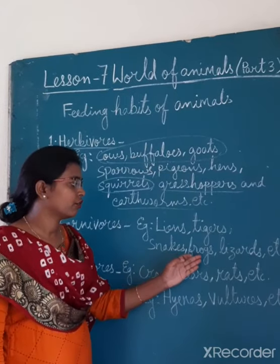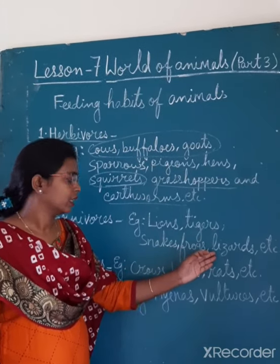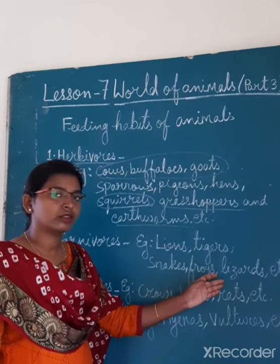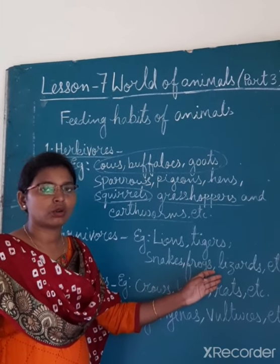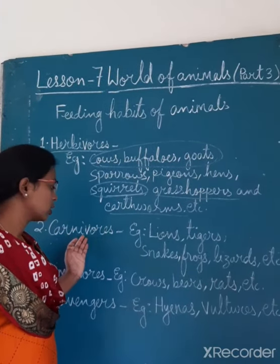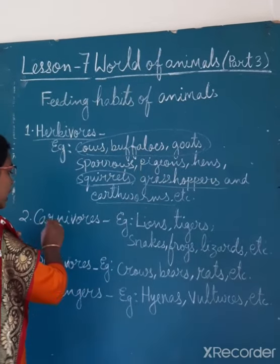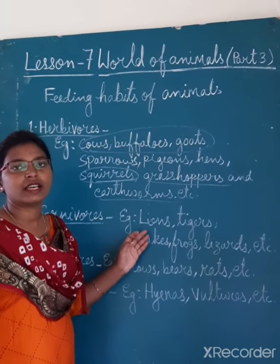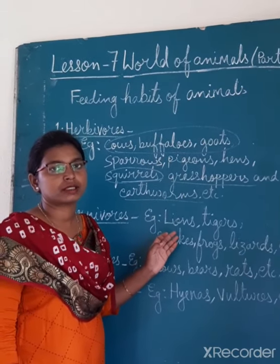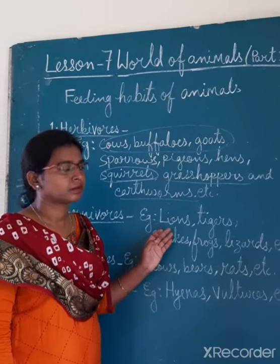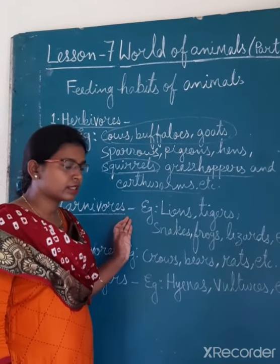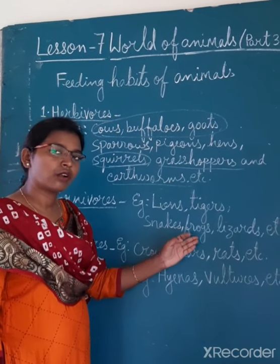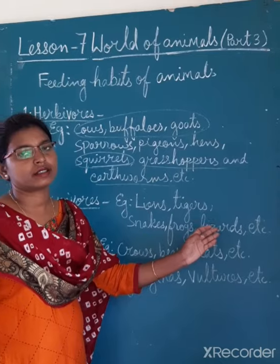Snakes, frogs, lizards — they are also carnivorous animals. They swallow their food as a whole. So, what are carnivorous animals? Carnivorous animals are those animals who eat the flesh of other animals. Examples for carnivores are lions, tigers, snakes, frogs, lizards, etc.